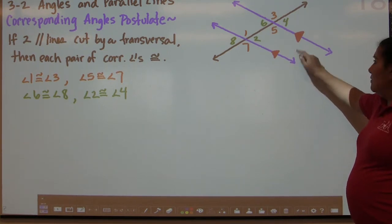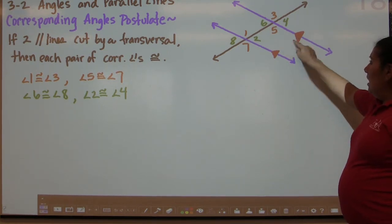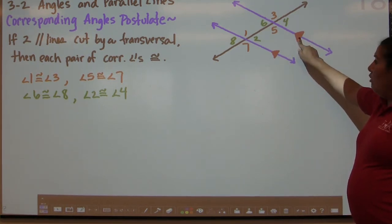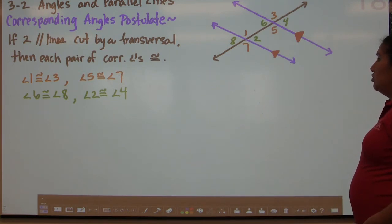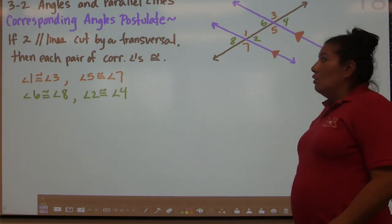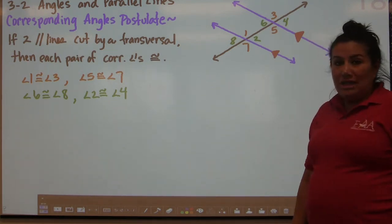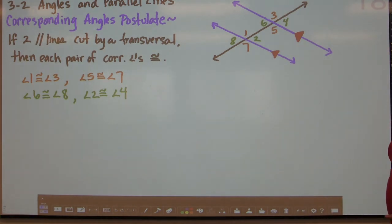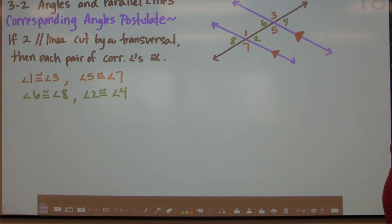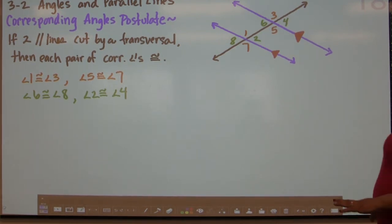We indicate parallel by using these pink-red arrows, indicating that the two blue lines are parallel. We have a postulate — remember that a postulate is kind of like a theorem, but it does not need to be proven; it's assumed to be true. We're going to start with the corresponding angles postulate.